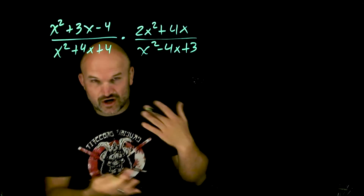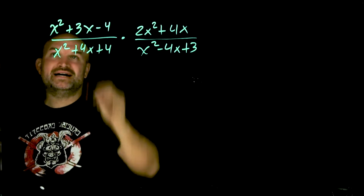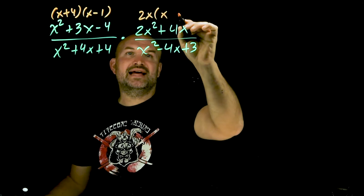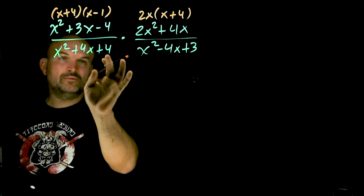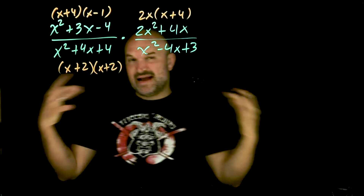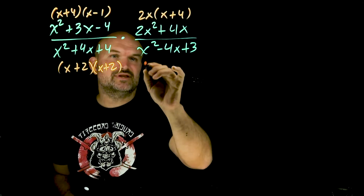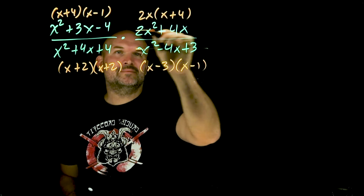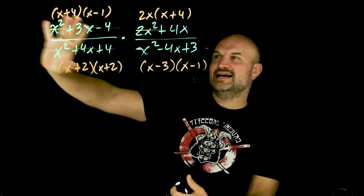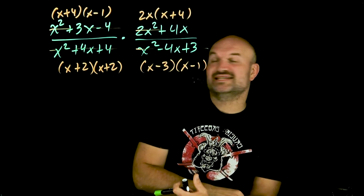I'll work through the factoring and write just the factored form. For the first trinomial, what two numbers multiply to give negative 4 and add to give positive 3? That's (x plus 4)(x minus 1). Next I factor out 2x, leaving (x plus 4). The third expression is a perfect square trinomial — two numbers that multiply to 4 and add to 2 — giving (x plus 2) squared, which I'll expand for accounting. The last one: two numbers multiply to positive 3 and add to negative 4, giving (x minus 3)(x minus 1).